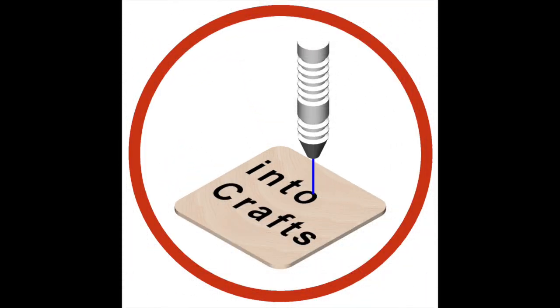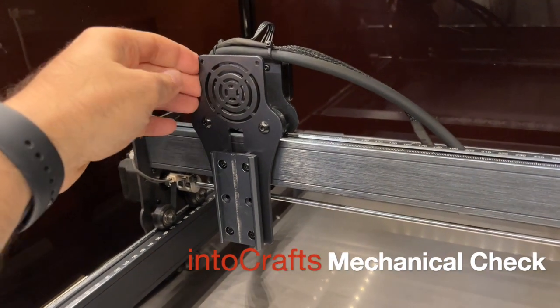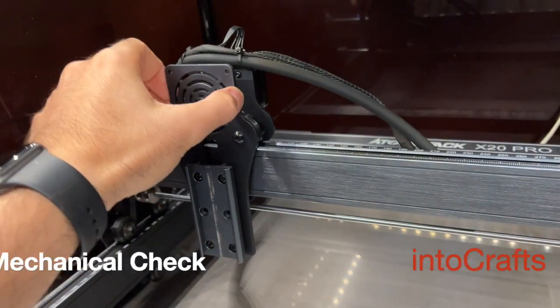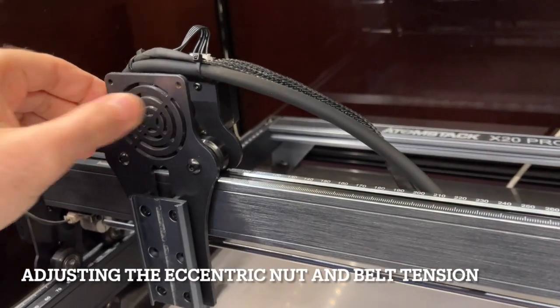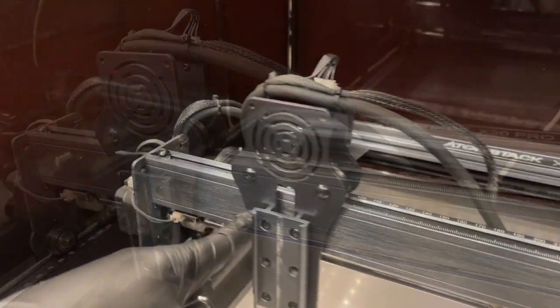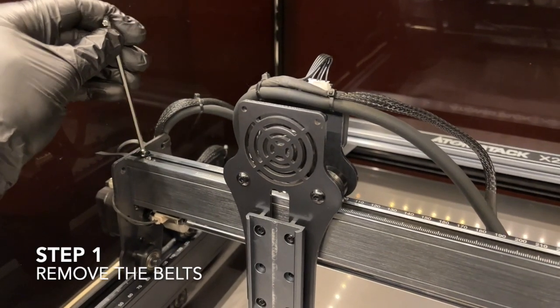Welcome to Intercraft channel. In this video, I'm going to talk about mechanical check of a laser engraving machine. In case we have an unpacked laser machine or our machine needs maintenance, a special step before doing anything else is to check if the machine parts are properly functional.